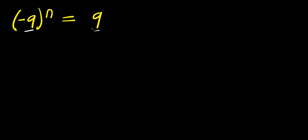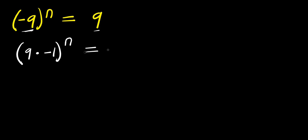We are going to start by simply replacing this negative 9 with 9 times negative 1. So negative 9 is 9 times negative 1, which gives us 3 power of n equals 9.